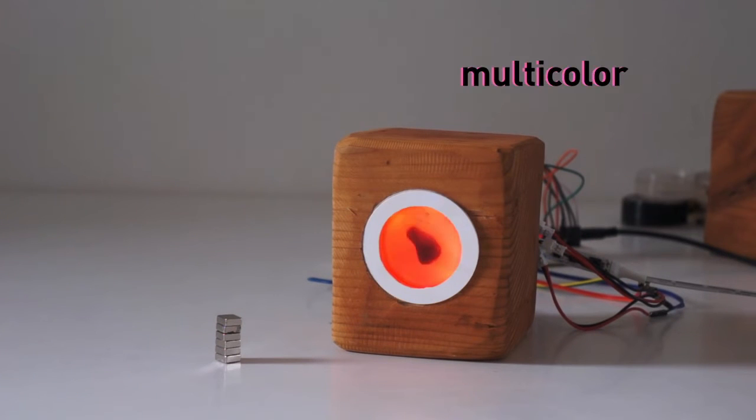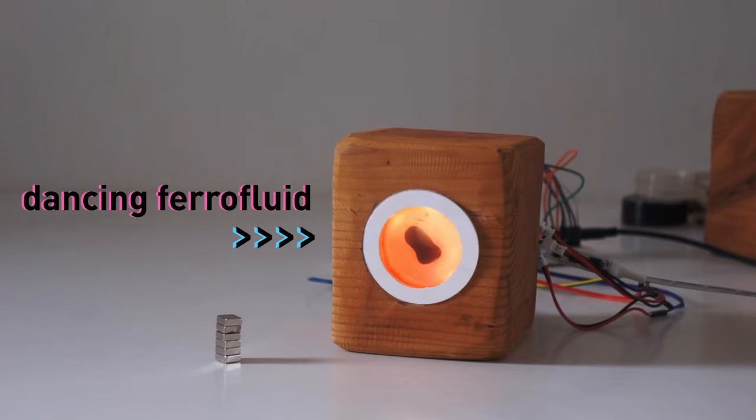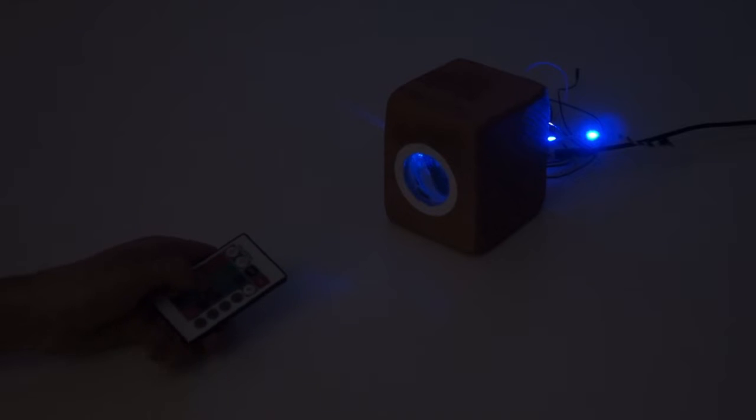Our ferro-pet lamp is a USB powered, multicolored device with a dancing ferrofluid blob fixed in the center. You can change the blob's color and dancing style through an included remote control, depending on your mood.